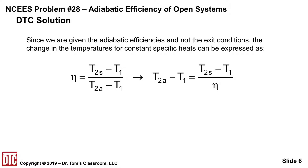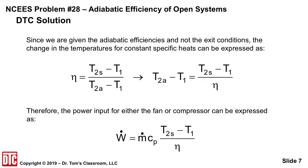The adiabatic efficiencies are given for both the fan and compressor, not the exit conditions. So the change in temperature for constant specific heats can be expressed by taking the adiabatic efficiency equation and solving for T2A minus T1, which gives T2S minus T1 over the given adiabatic efficiency. Therefore, the power for either the fan or the compressor can be expressed as M-dot times Cp times (T2S minus T1) over the adiabatic efficiency. We are given T1, so we just need T2S.